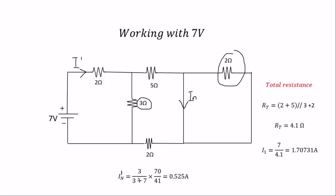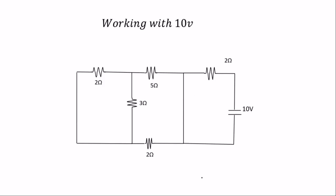We used the current divider rule to find the Norton's current from the 7 volt source. Now we are done with the 7 volt source. Next is to work with the 10 volt source. With the 10 volt source, the current is moving from here and the Norton's current will be here. Let's label this Norton's current 2.